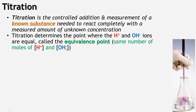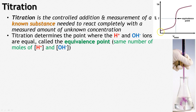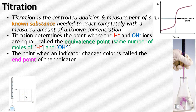You might think the equivalence point is always going to be at neutral, but that's not always the case. Notice the titration curve is not a straight line. As you add in different volumes of base, the pH changes a little bit at first, then very rapidly, then levels off again. The reason is logarithms — that multiple of 10 causes the pH to change very quickly. The point right in the middle of that rapid change is the equivalence point, where the pH changes so rapidly that it allows you to identify it precisely.